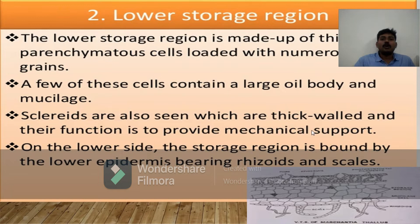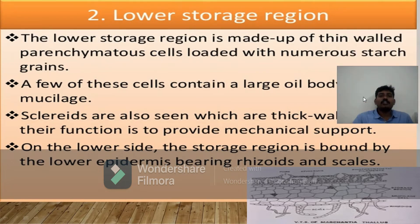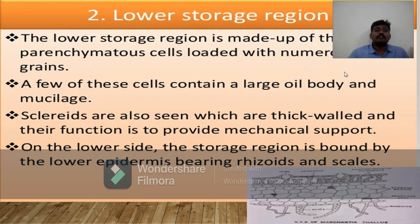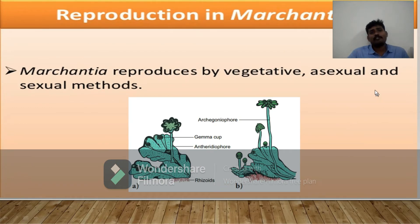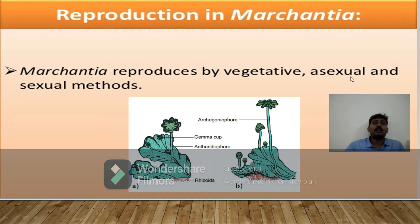Coming to the second region: the lower storage region. This region is made up of thin-walled parenchymatous cells loaded with numerous starch grains. Some of these cells contain a large oil body and mucilages. In this region, sclereids are also seen which are thick-walled; their function is to provide mechanical support. On the lower side, the storage region is bounded by the lower epidermis bearing rhizoids as well as scales.